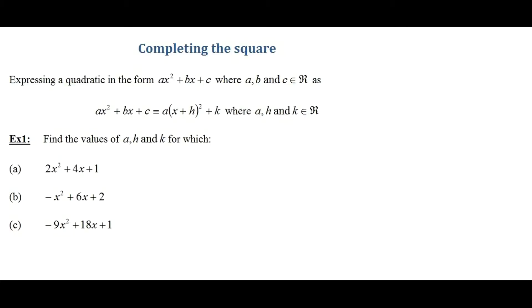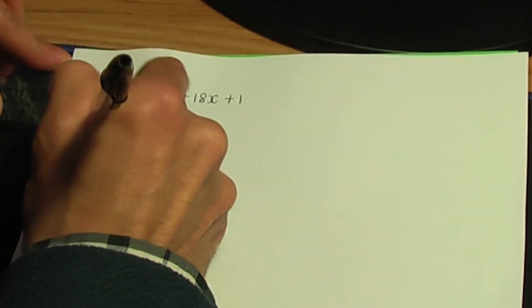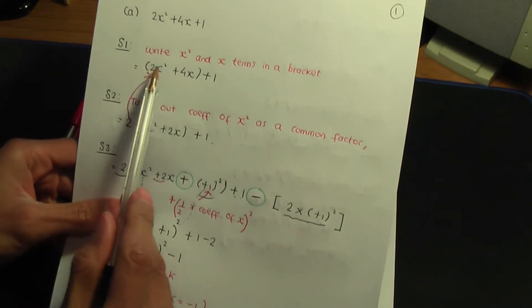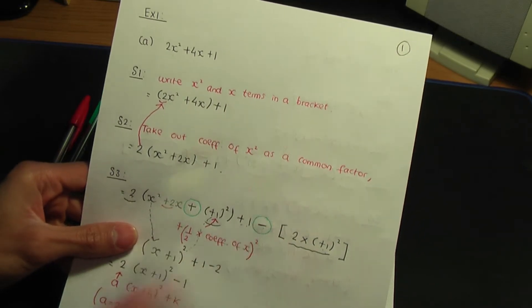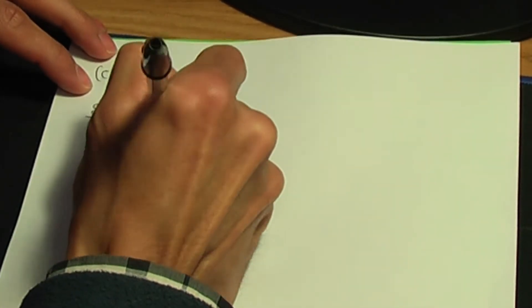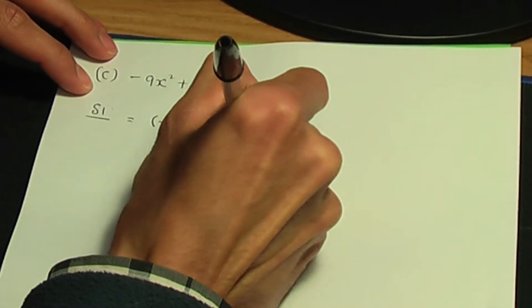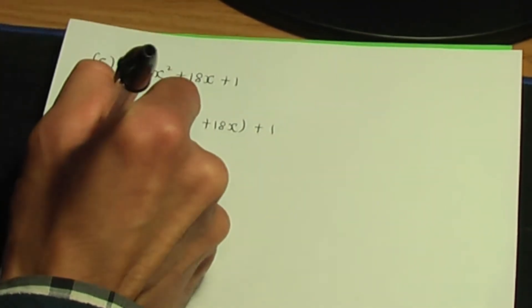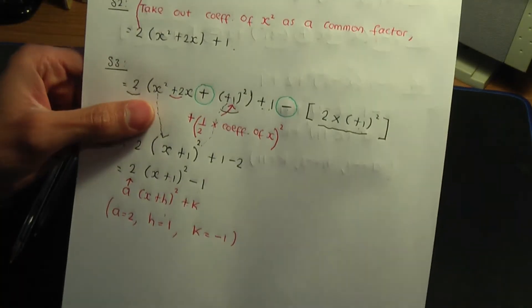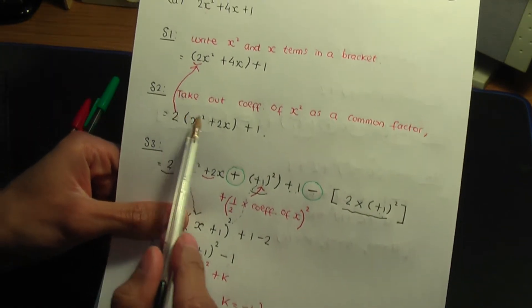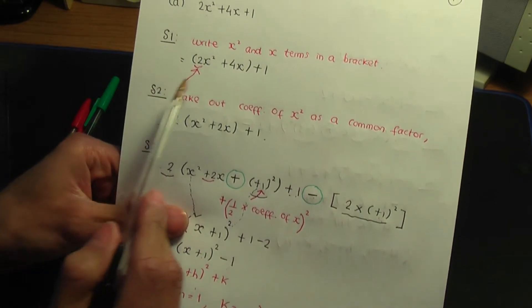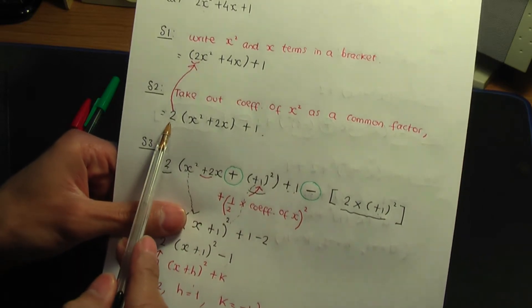For part c, let's complete the square of minus 9x squared plus 18x plus 1. Back to paper and pen: minus 9x squared plus 18x plus 1. Step number 1: write the minus 9x squared and plus 18x terms in a bracket, leaving the plus 1 outside. Step number 2: take out the coefficient of x squared — which is minus 9 — as a common factor. I'm left with x squared minus 2x inside the bracket.